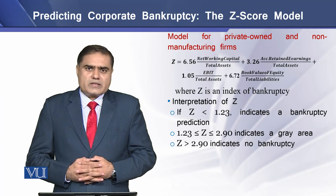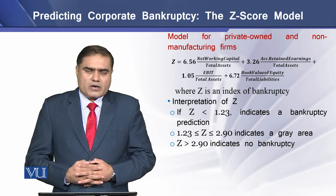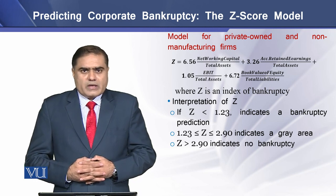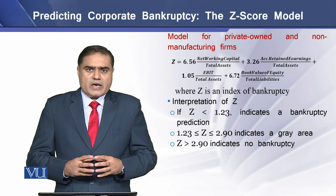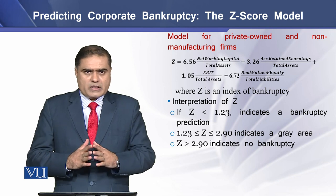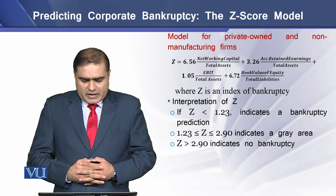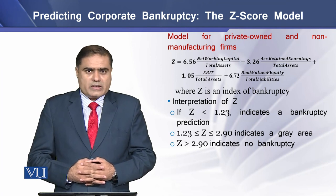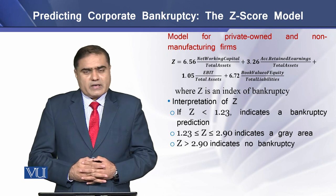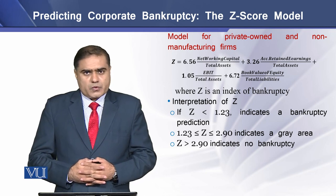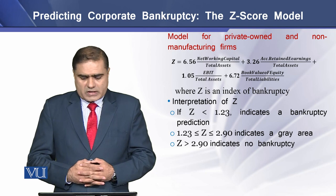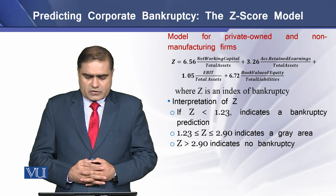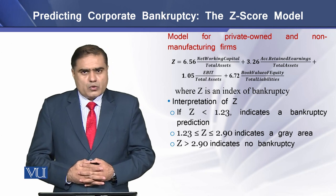On the similar footings, Altman developed another model used for privately owned and non-manufacturing firms, and the values are a little different from the earlier model. Here, if the Z-score is less than 1.23, this indicates a bankruptcy prediction. If the score is from 1.23 to 2.90, this indicates a gray area. And if the score is greater than 2.90, this indicates no bankruptcy.